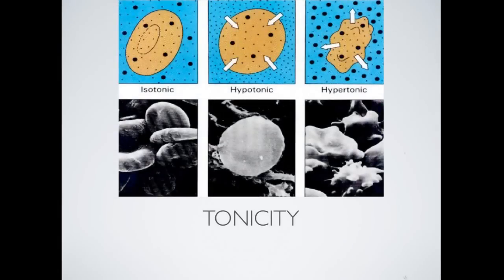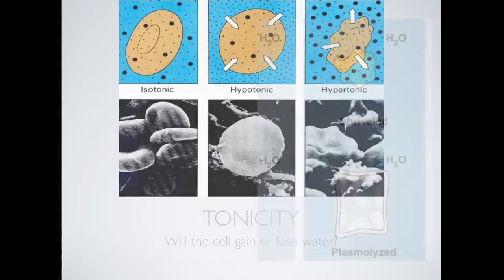Now we're going to talk about tonicity, which is basically the idea of whether a cell will gain or lose water. And there's three types of solutions. I'm going to go through each one individually. But they are isotonic, hypotonic, and hypertonic. And each one has a different effect on the cell.